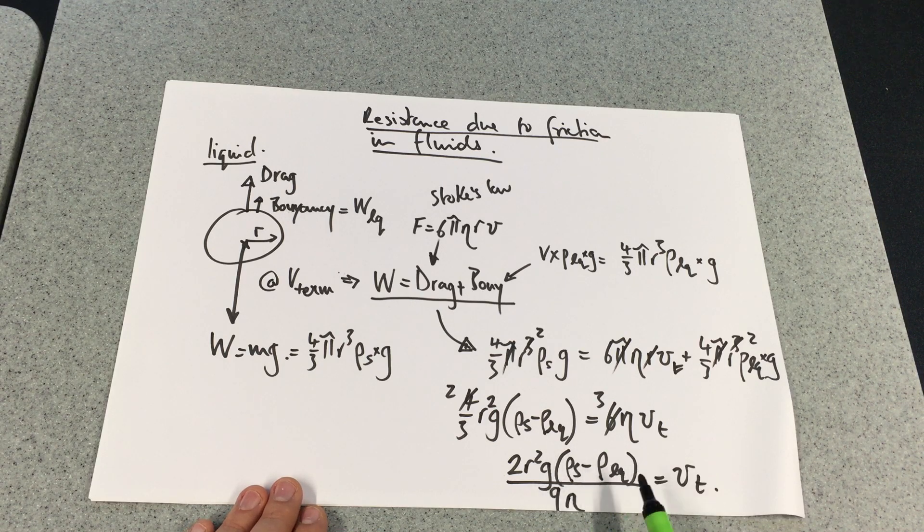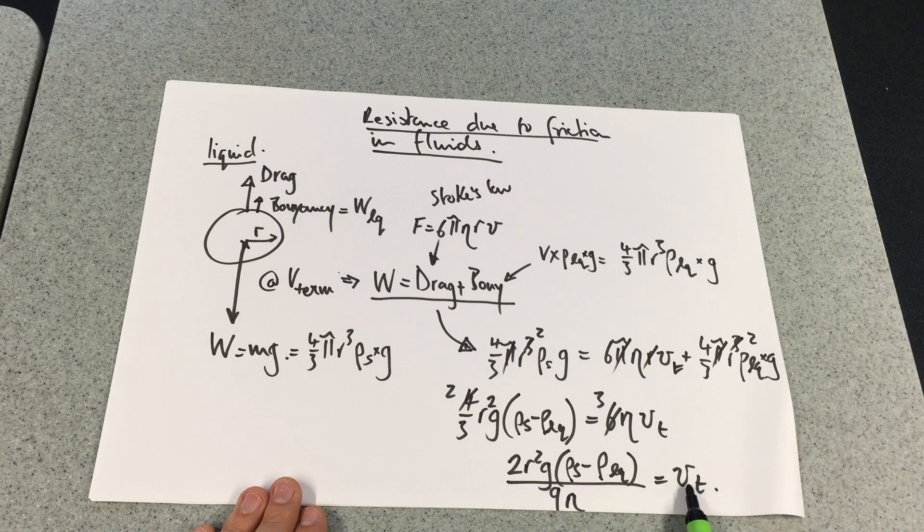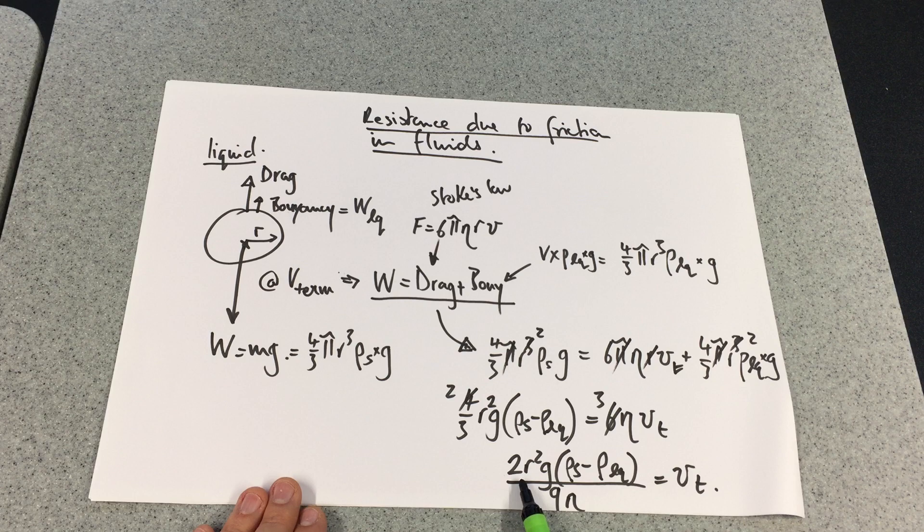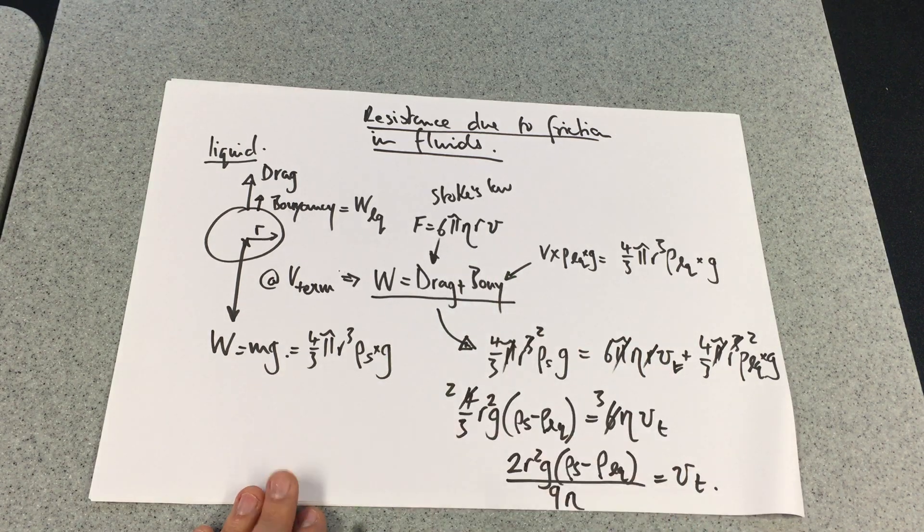But we're being precise, leaving it all in. Essentially what we're discovering is that the terminal velocity v is proportional to r², if this obeys Stokes' law.